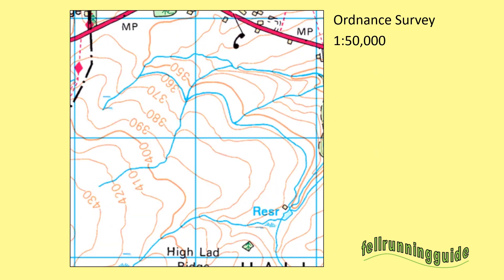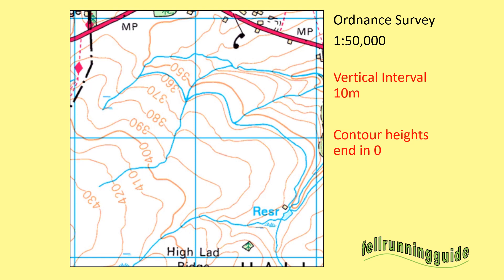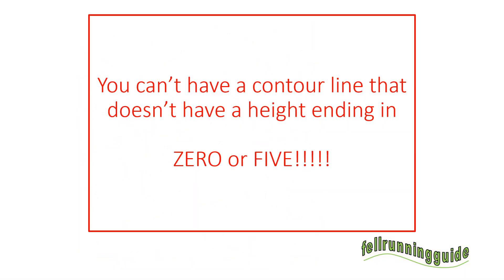On an Ordnance Survey 1 to 50,000, the vertical interval is 10 metres, and the contour heights always end in a zero. You can see here 350, 360, 370, 380, etc. So what you need to be aware of is: you can't have a contour line that doesn't end in a zero or a five. You can't have a contour line that's the 323 metre contour — it's got to end in a zero or a five.